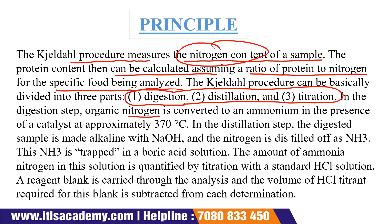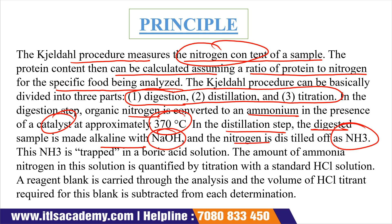In the digestion step, organic nitrogen is converted into ammonium in the presence of a catalyst at approximately 370 degrees Celsius. In the distillation step, the digested sample is made alkaline with the addition of NaOH, and the nitrogen is distilled off as NH3.